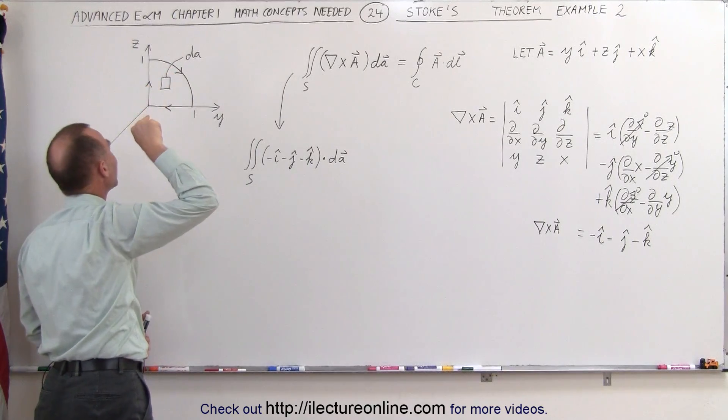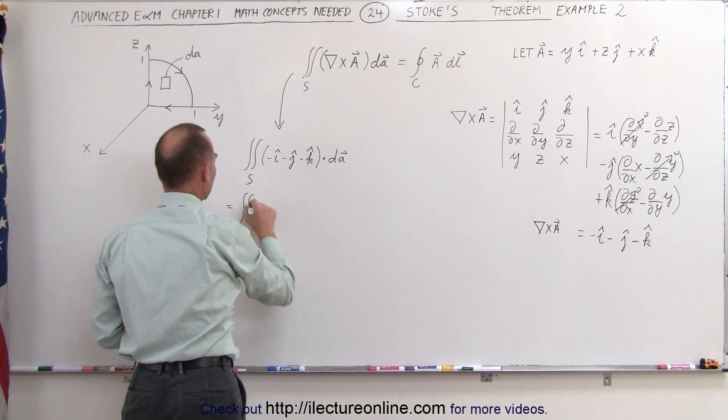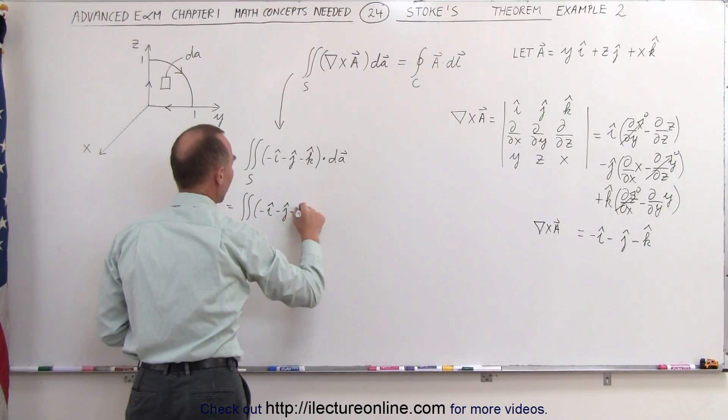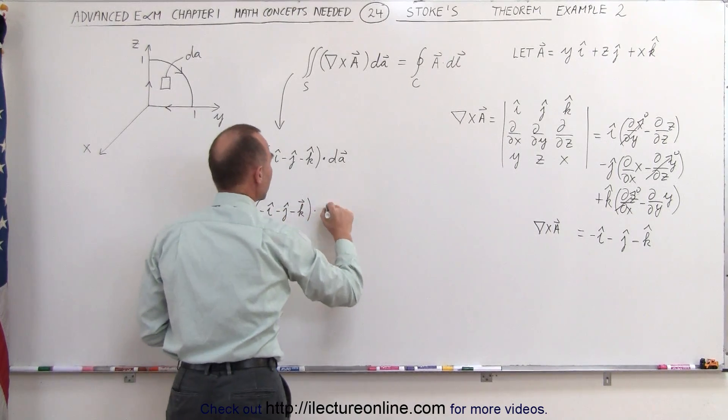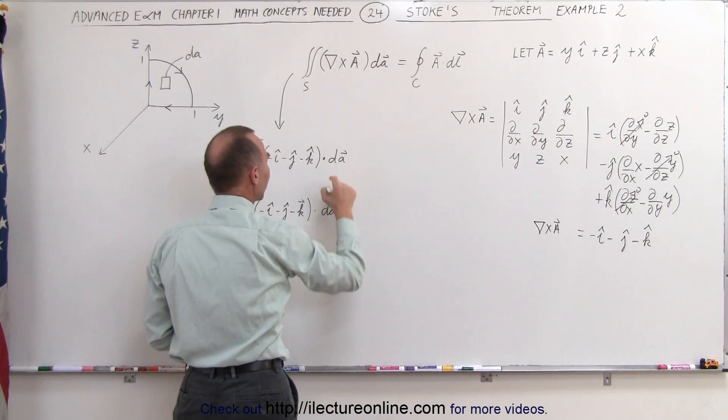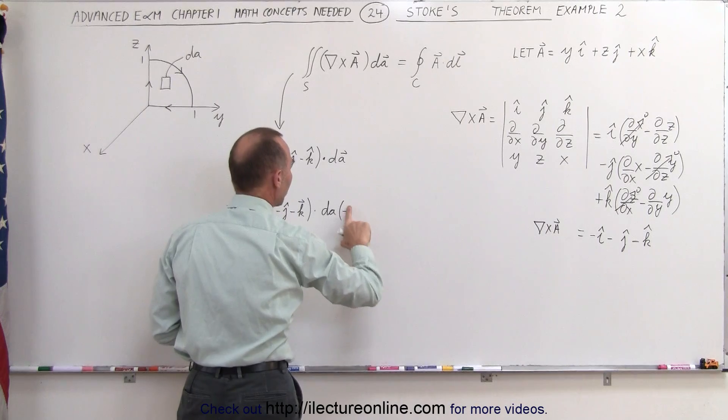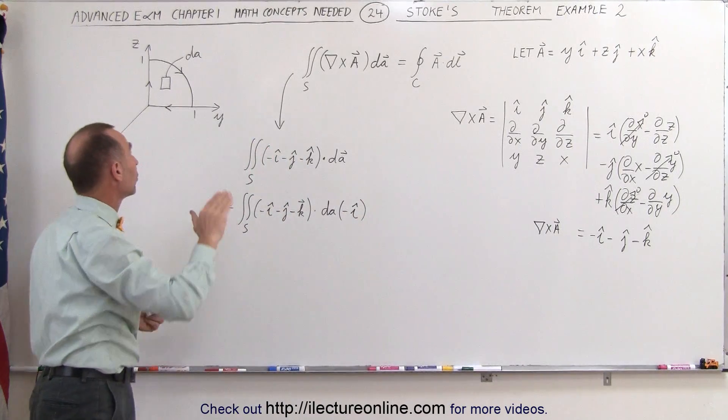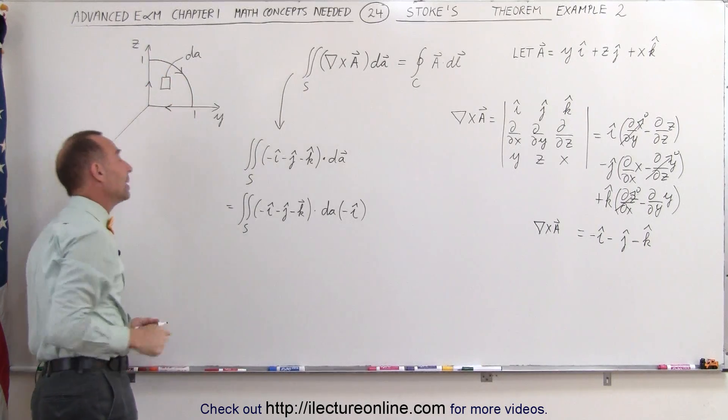which means a unit vector is into the board, that means it is a negative x direction. So this can then be written as the surface integral of minus i, minus j, minus k, times dA, and times the unit vector, which would be minus i unit vector, because it's into the board. Remember, use your right-hand rule, and since you're integrating around the curve like this, it's going to be into the board.